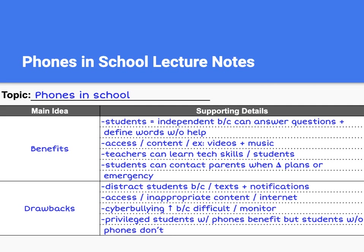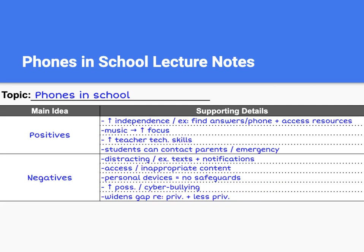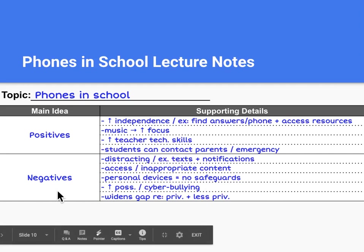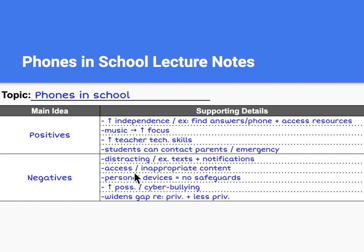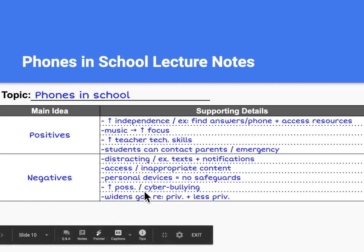Let's look at an alternate version of these same notes — same content, but written differently. Here the main ideas are positives and negatives, which isn't wrong, just a different way to write it. Positives: increased independence, for example find answers on phone and access resources; music leads to increased focus; increased teacher tech skills; students can contact parents in emergency. For the negatives: distracting, for example texts and notifications; access to inappropriate content; personal devices with no safeguards; increased possibility for cyberbullying; and a widening gap regarding privilege and less privilege.